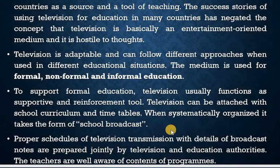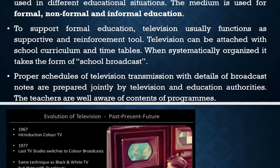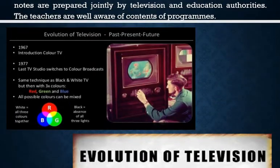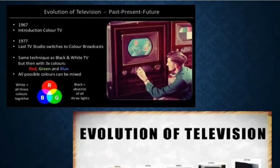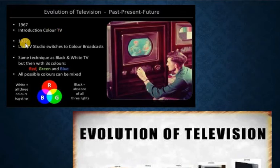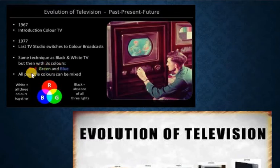The teachers are well aware of the contents of programs. In this picture we can see clearly the evolution of television — past, present, and future. In 1967 came the introduction of color TV. In 1977, the last TV studio switched to color broadcast, using the same technique as black and white TV but with three colors: red, green, and blue.